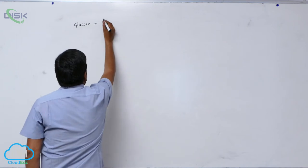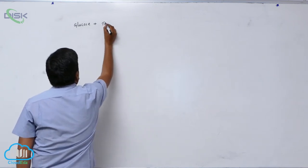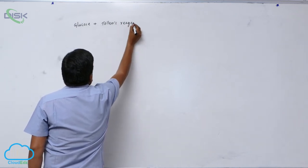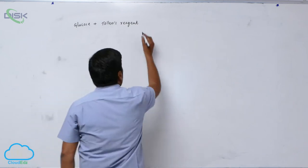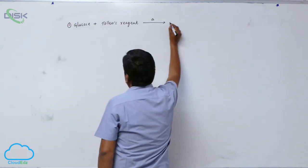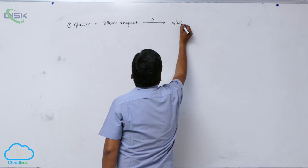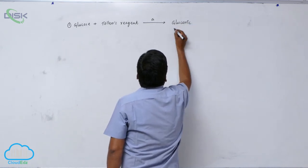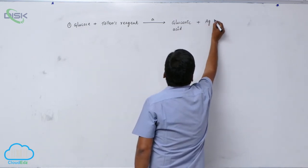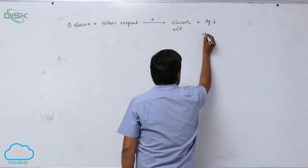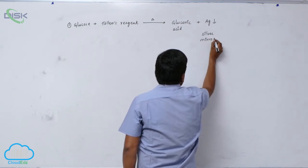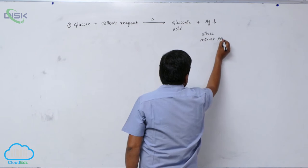Glucose plus Tollens' reagent: on heating, it forms gluconic acid and metallic silver. This is the silver mirror test — it gives a silver mirror precipitate.